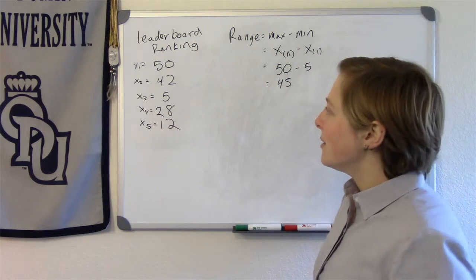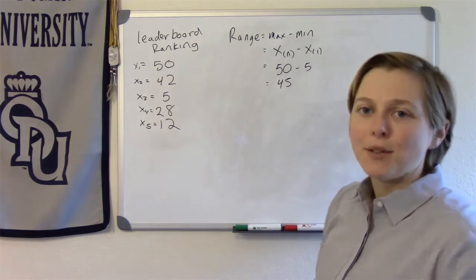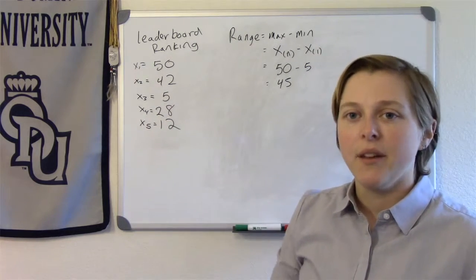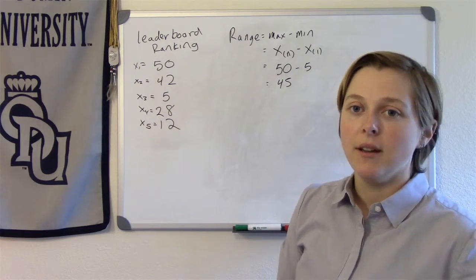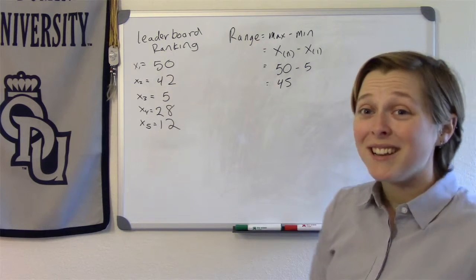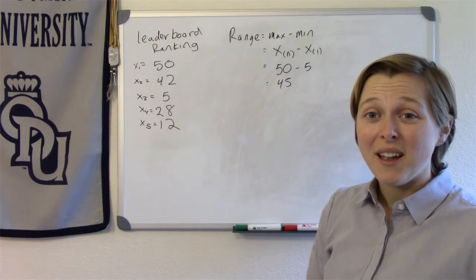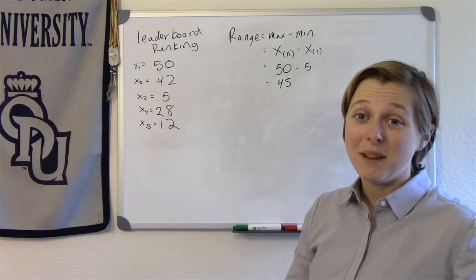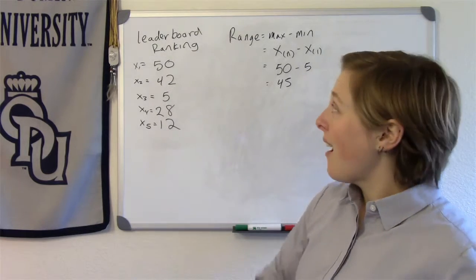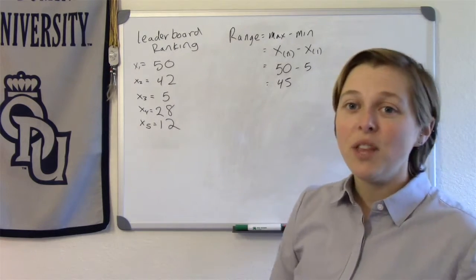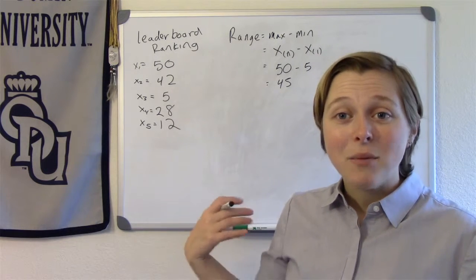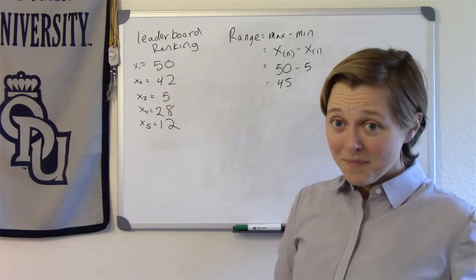Say I have another observation where I was on the 100th leaderboard ranking, right? That would make my range change from 45 to 95, just because of one little outlier. Outliers are highly influencing the range, because if you think about it, outliers are going to be either the min or the max value, and that's exactly what the range uses.